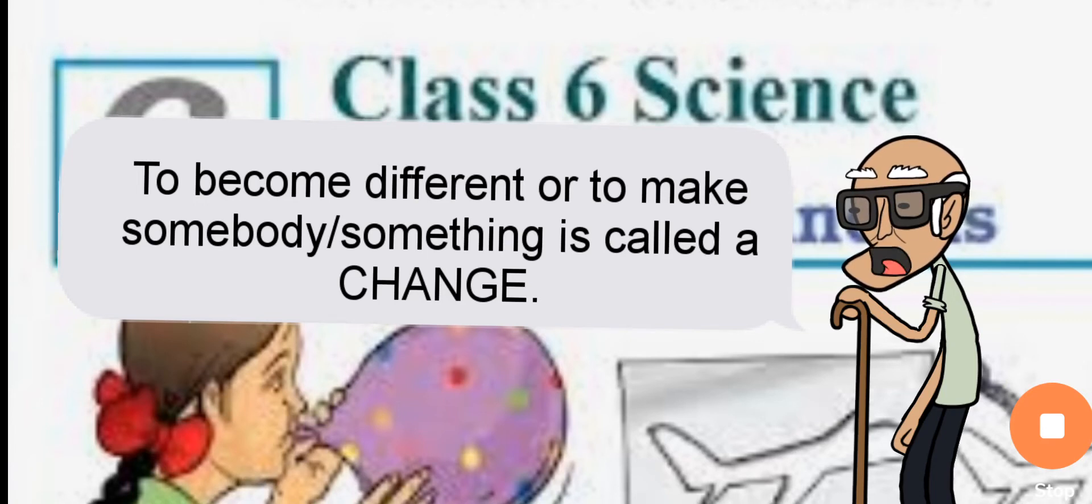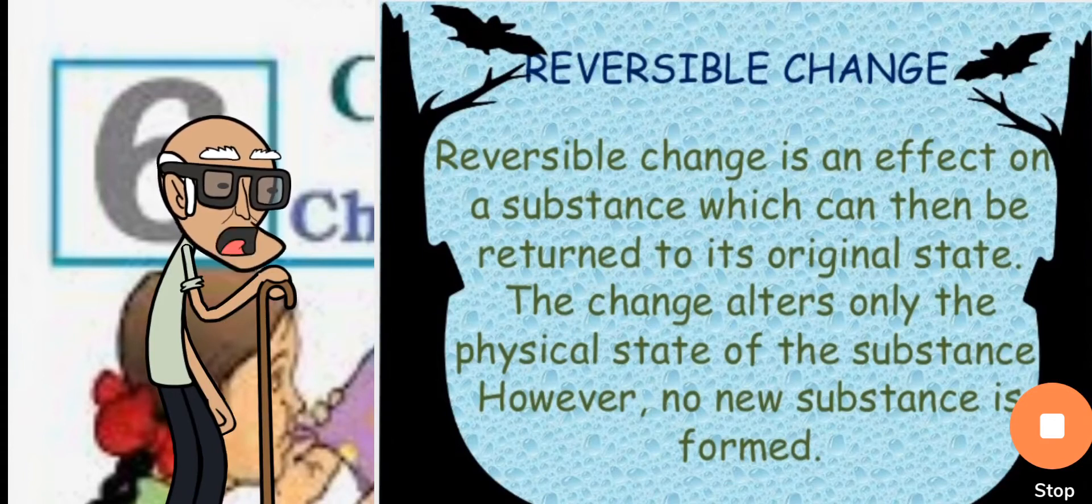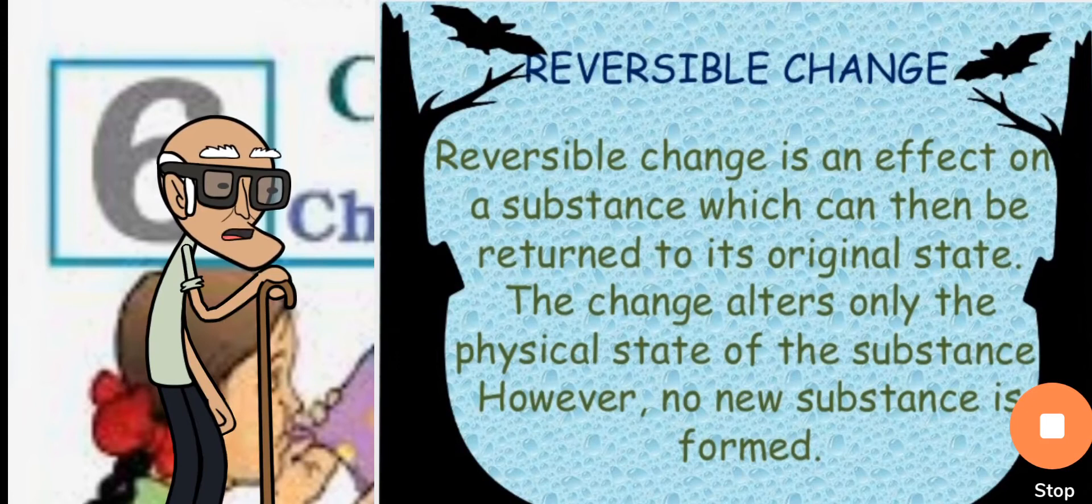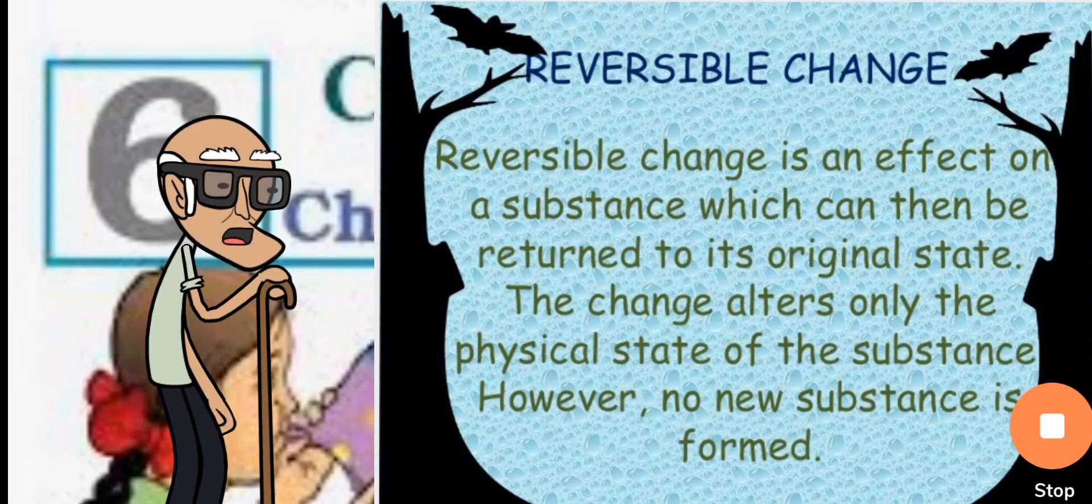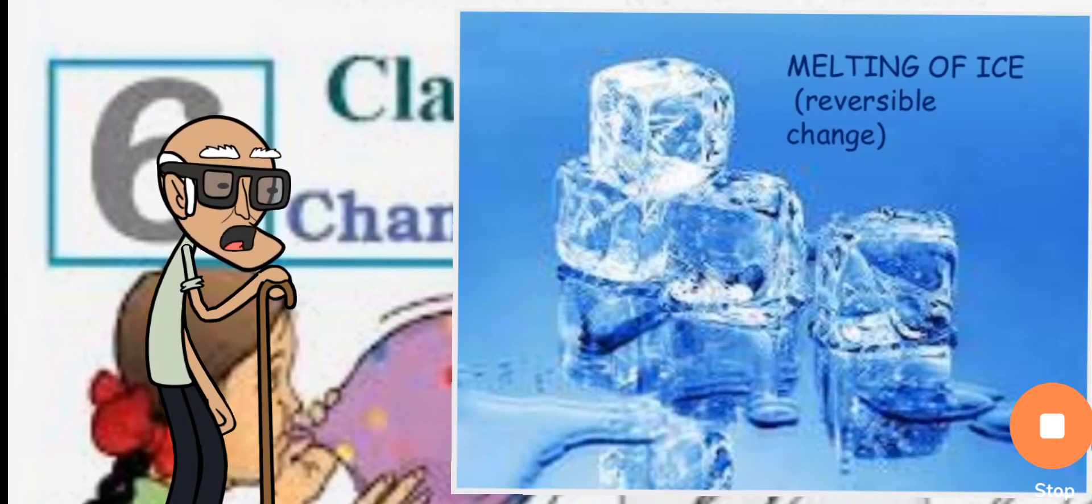It is of 4 types which are mentioned in this chapter. First is reversible change. Reversible change is an effect on a substance which can then be returned to its original state. The change alters only the physical state of the substance. However, no new substance is formed. For example, melting of ice.